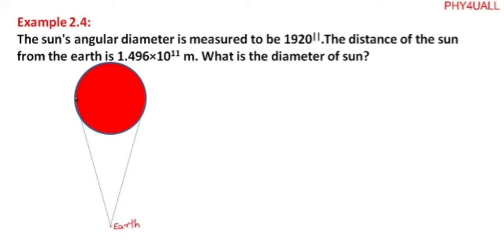So the diameter of the sun, just imagine this is the diameter, we can mark it as d. And from the earth to the sun, consider the distance as D. It is given as 1.496×10¹¹ meters, which is the same as one astronomical unit.